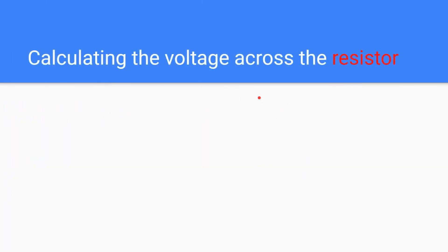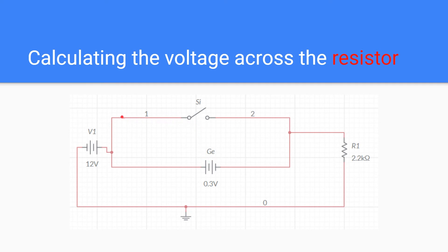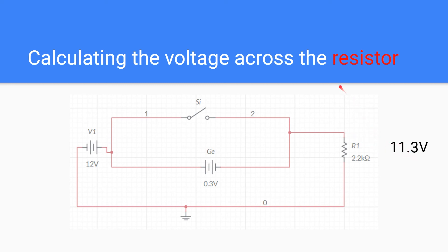After this analysis, this is how the circuit looks: the germanium diode is ON with a 0.3 volt drop, and the silicon diode is OFF. The 12 volt drop is distributed across the elements — 12 minus 0.3 equals 11.7 volt across the resistor. We can say this intuitively by looking at the circuit diagram, and we will also verify using KVL.